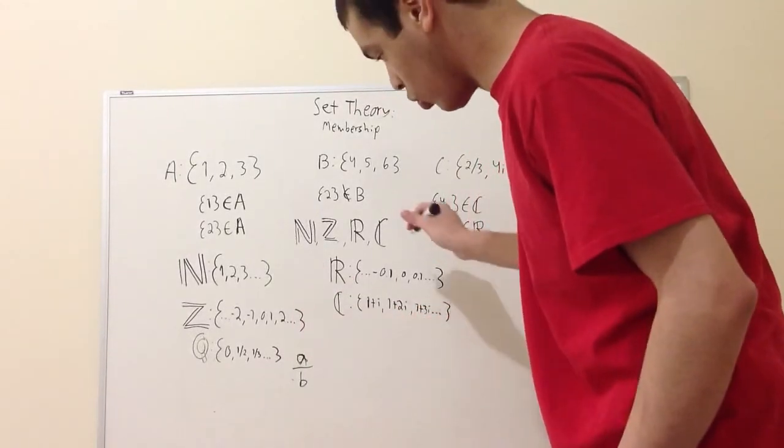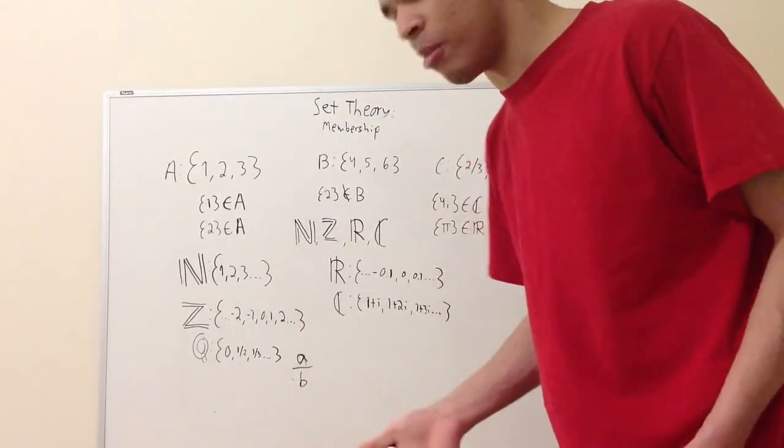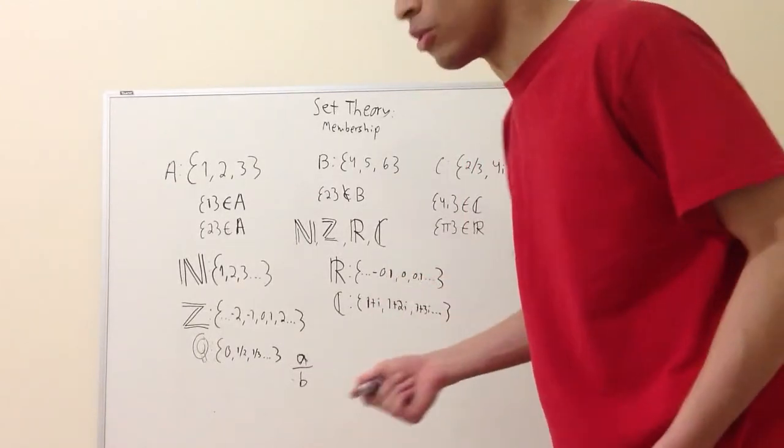Then you have the reals, which are really any number you can think of that's not complex. And C is, of course, complex numbers.